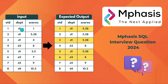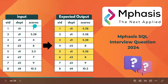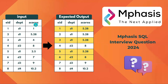We have department details — department one, department two, department three, department four — along with the scores. So we have department-wise scores available. If you look at the expected output, we need to update the scores column.